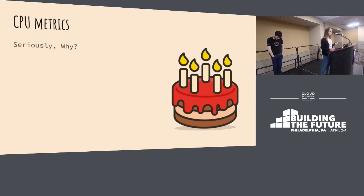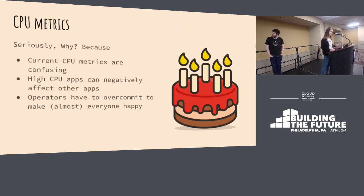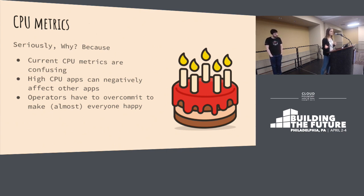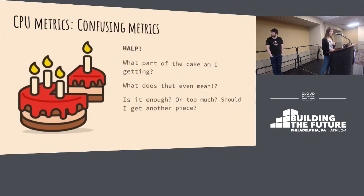You're probably wondering — Cloud Foundry already has this functionality, right? When you do CF app and the application name, you get some numbers about CPU. And you're right, we have that. But the current approach has a few problems. The main problems are three: the current metrics are a bit confusing; applications can actually affect the performance of other applications; and life is super hard for operators.